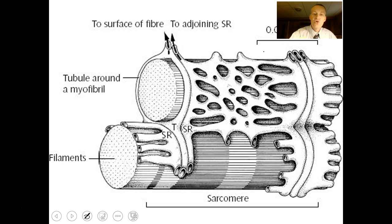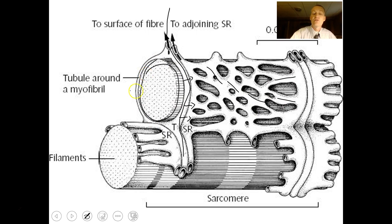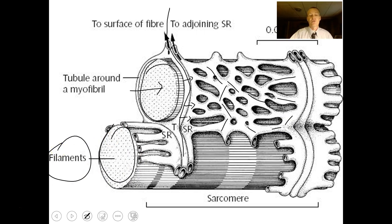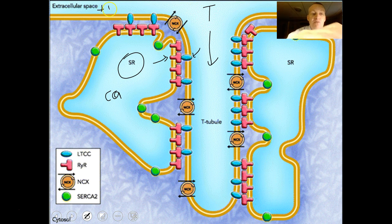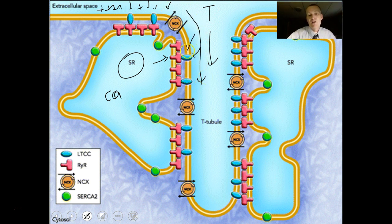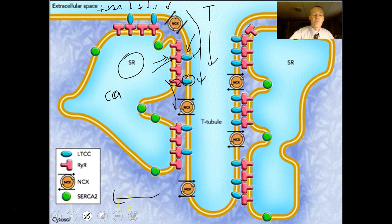The T-tubule dives deep into the interior of the muscle cell, intimately linked with the sarcoplasmic reticulum, which extends all across those myofibrils. If we change the voltage inside the cell, it changes the shape of the voltage-sensitive protein, which changes the shape of the calcium channel protein, opening a pore and allowing calcium to flood out across the myofibrils in all directions.